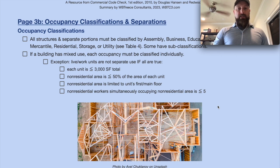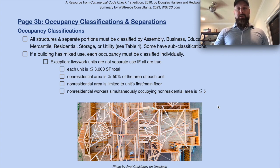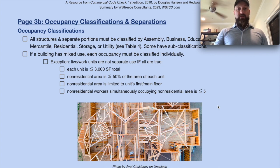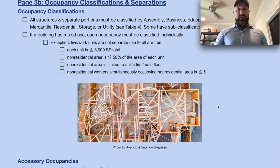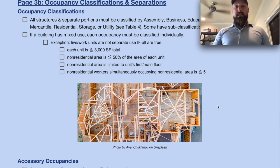If a building has a mixed use, each occupancy must be classified individually. There is an exception for live-work units — they're not considered separate use if the following four things are true: each unit must be less than or equal to 3,000 square feet total; the non-residential area must be less than or equal to 50% of the total area; the non-residential area is limited to the unit's first or main floor; and non-residential workers simultaneously occupying the non-residential area must be less than or equal to 5.